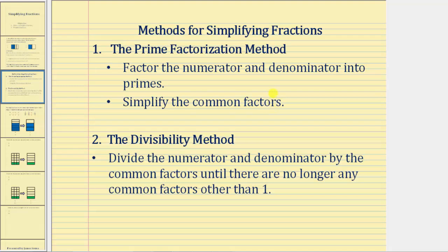The second method is the divisibility method. To apply this method, we divide the numerator and denominator by the common factors until there are no longer any common factors other than one. We will be showing both methods for our examples.